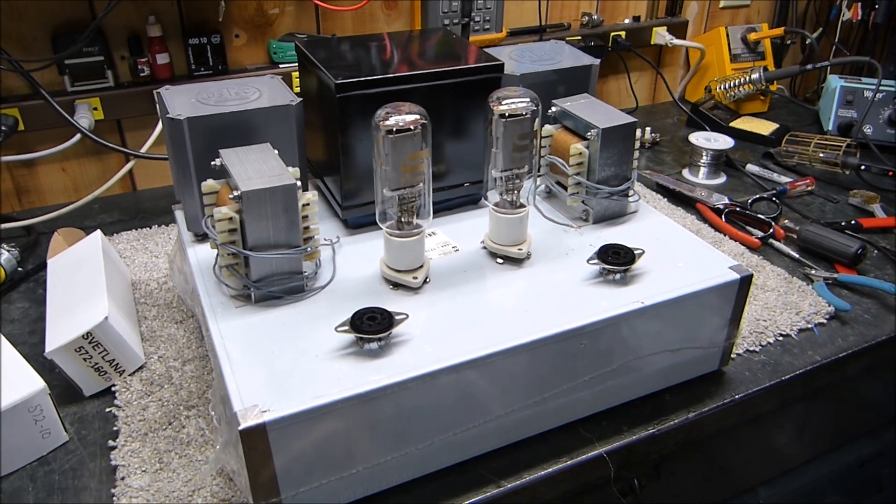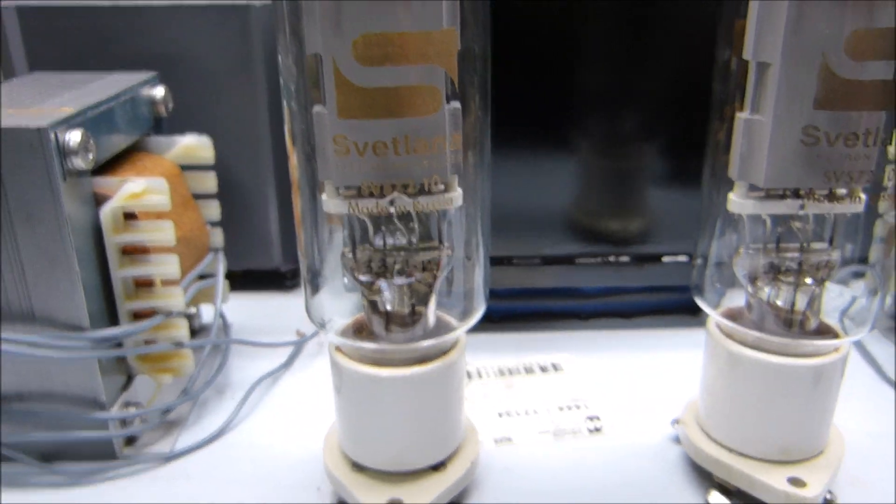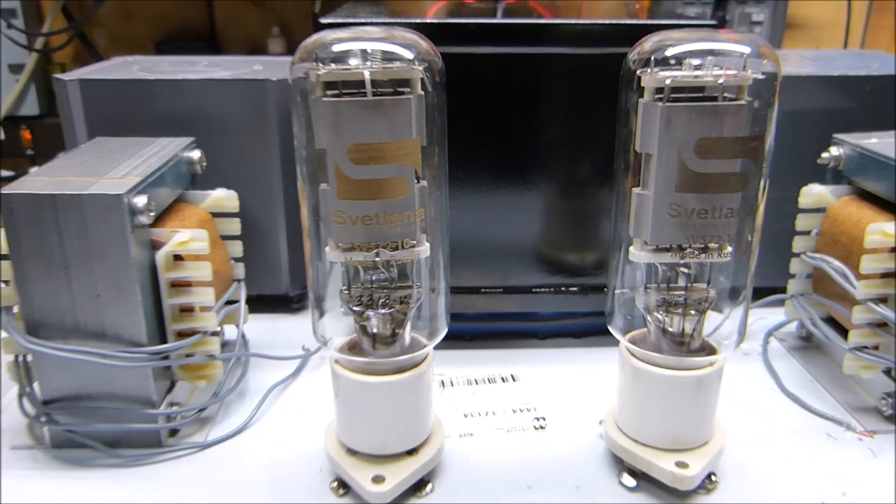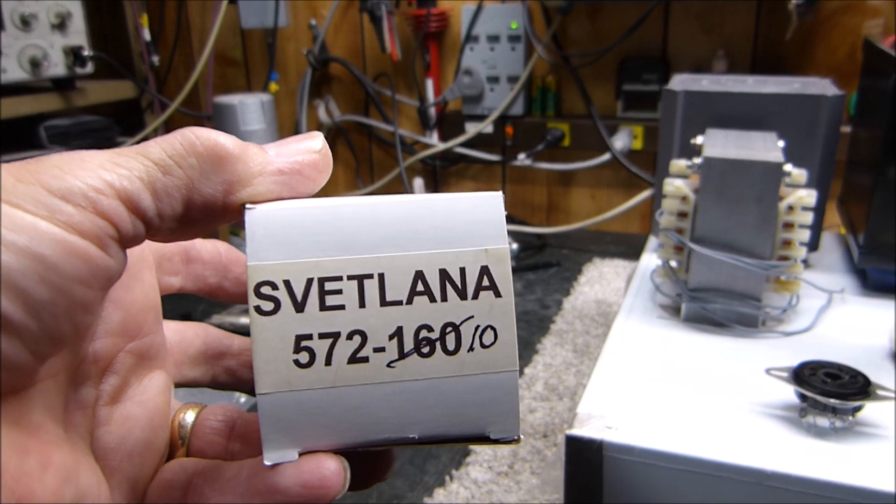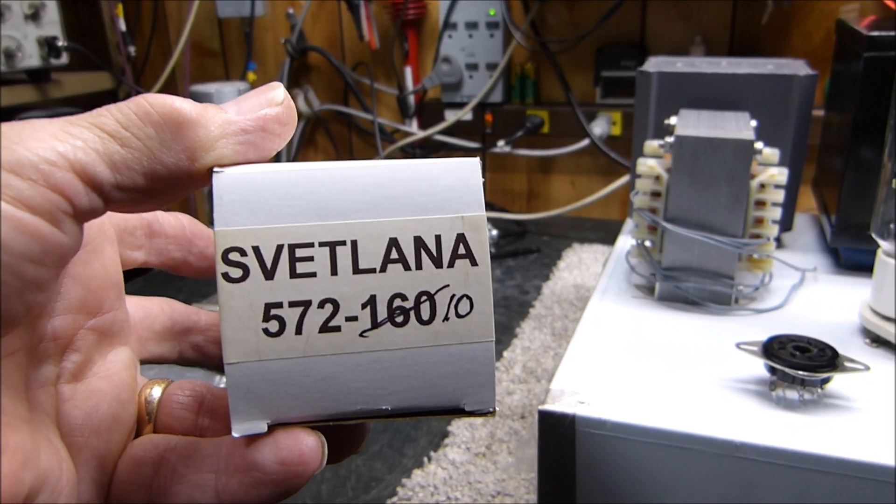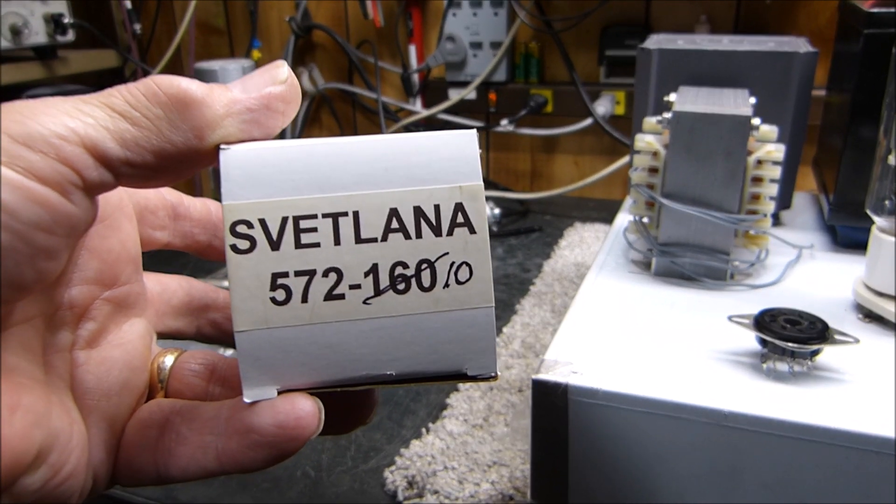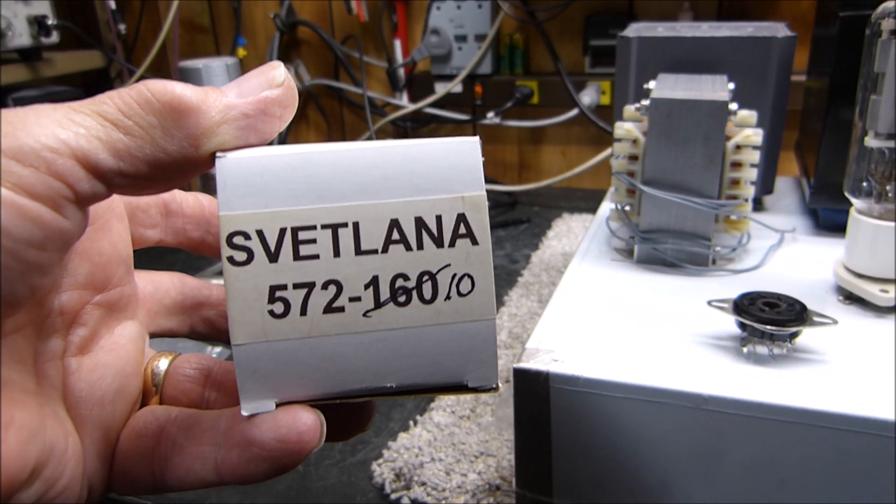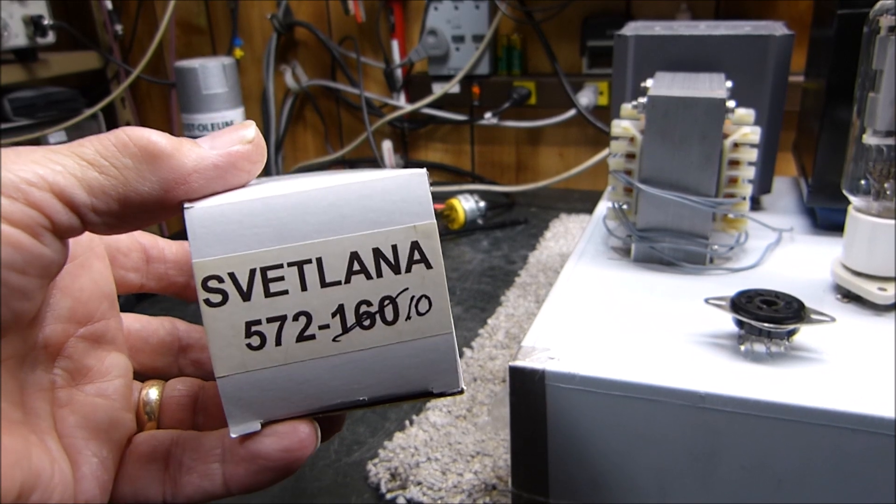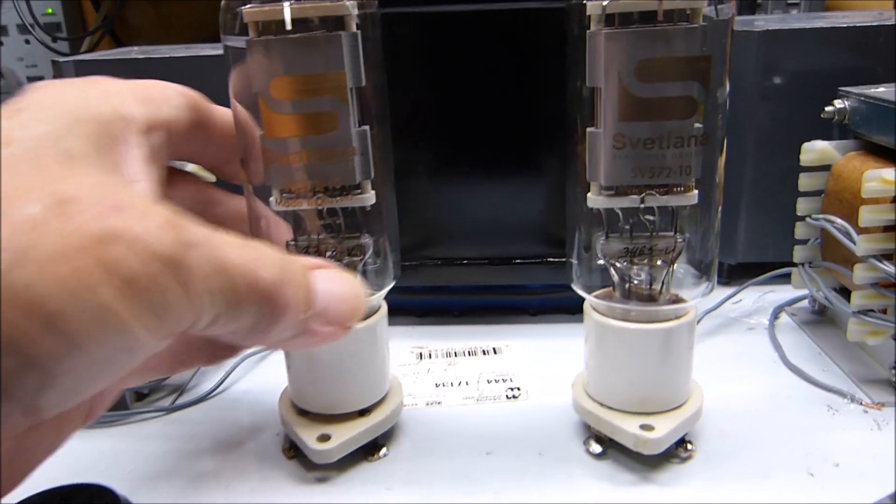These are some beautiful Svitulana 572-10s, as you can see. I got them actually quite cheap because, look here, here's what they were sold as. I made that mark on there. I put the line through the 160 and wrote 10 on it. But they were sold as Svitulana 572-160s. The 160 is the gain of the tube, which if it were a 160, it would be an 811. But it's not an 811. It's a 10.